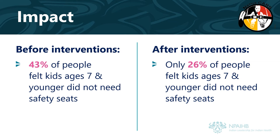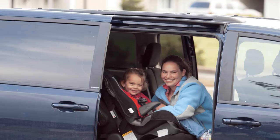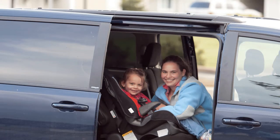The Native CARS team also looked at shifts in community members' beliefs about how to safely transport children. Before interventions, 43% of people driving kids felt children ages 7 and younger did not need child safety seats. After interventions, only 26% thought children 7 and younger did not need child safety seats. Native CARS trained 22 tribal child passenger safety technicians who held 46 car seat check events, 71 education classes, and distributed 904 child safety seats to families in need. Today, many of these technicians are still actively serving their communities long after the official Native CARS interventions were completed.